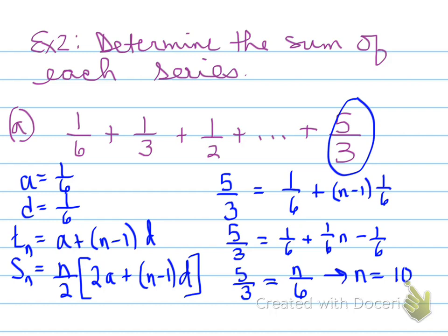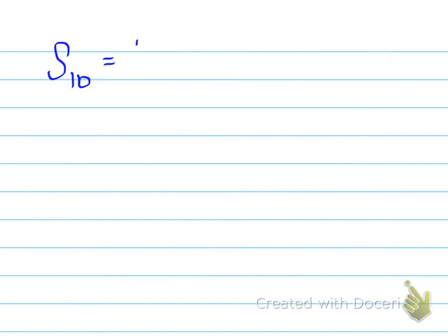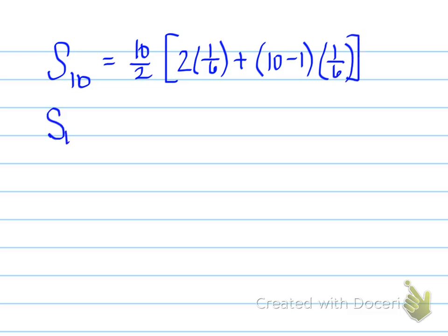We need to find the sum of the first 10 terms. So it's 10 over 2 times 2 times the a value plus 10 minus 1 times the d value. And you find out that the sum of the first 10 terms is 55 over 6. Alright, on to the next one.